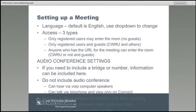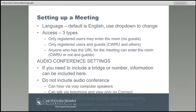The other thing you will be entering is the access setting, and you will get three options with radio buttons. The first option is "Only registered users may enter the room" — meaning only people you have allowed access can use your meeting space, no guests, and only Case Western Reserve people with a network ID and password. If you only want those specific people, you would use this option.